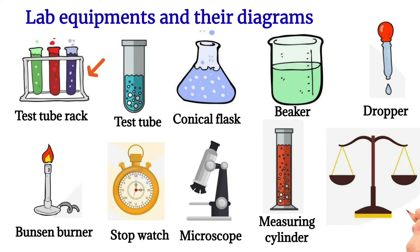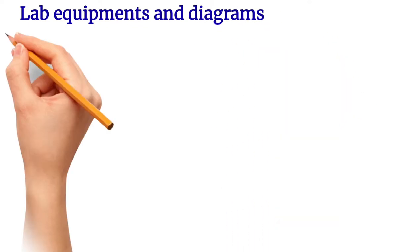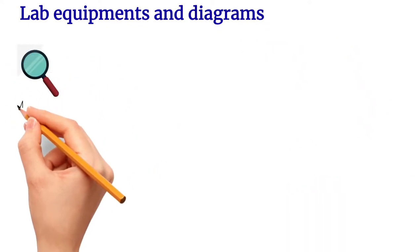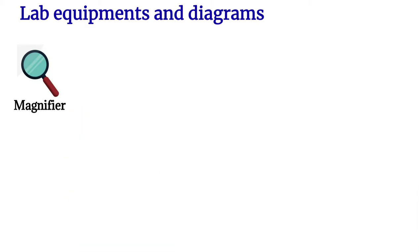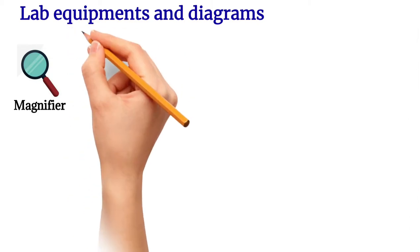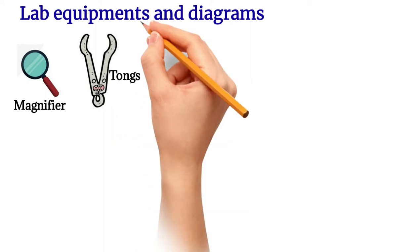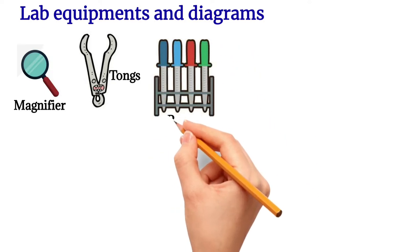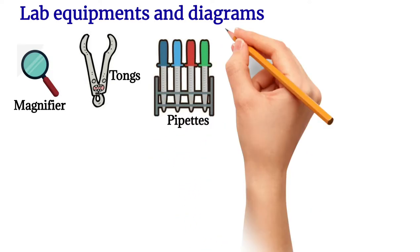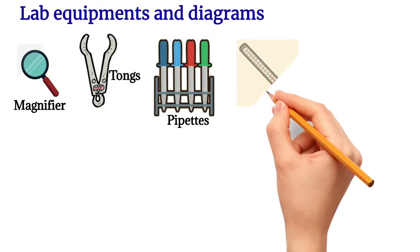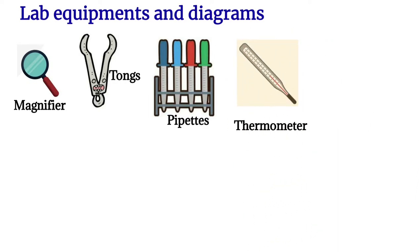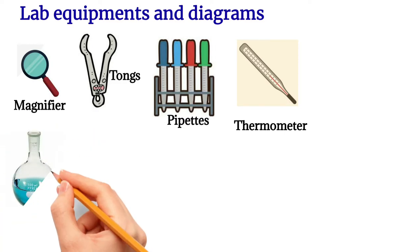This is a balance, which helps to measure the mass of an object. Next, this picture represents a magnifying glass, which helps to magnify things that are too small to see with the naked eye. This is a tong, which helps to hold the test tube. This is a pipette.